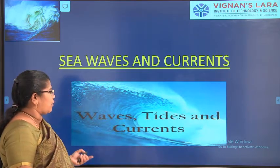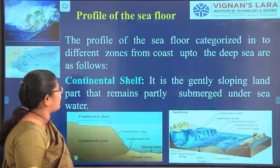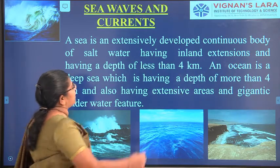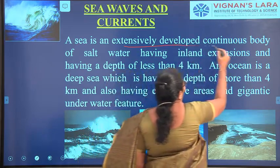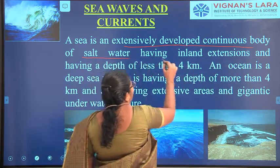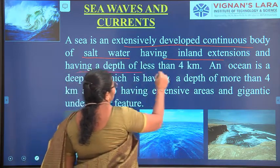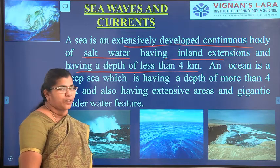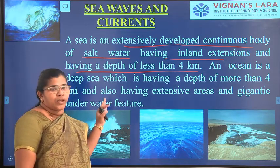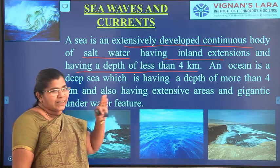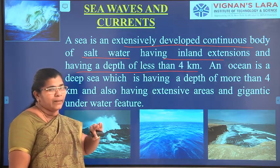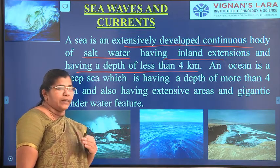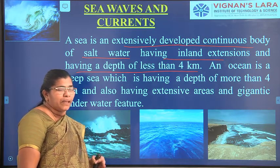We will see the waves, stripes and currents that form sea waves and currents. The sea is an extensively developed, continuous body of salt water having an inland extension. Due to tidal activity, waves, and other disturbances, the sea has caused so many changes — that is, weathering of rocks in many places.